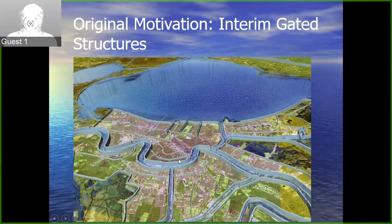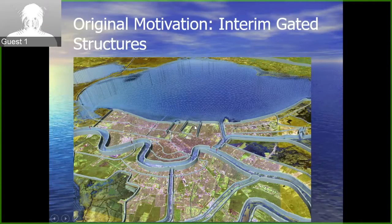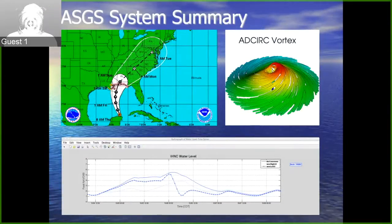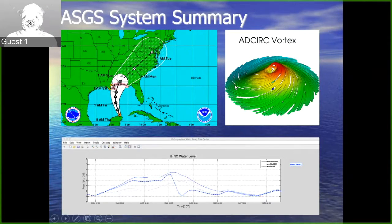After the storm, the Corps wanted to shore up those canals and build floodgates at the entrances where they lead into Lake Pontchartrain. At the time those gates would have to be lowered in place with tall cranes because the hydraulic actuation was not finished yet, so they needed real-time guidance for wind and water level at those three locations because the cranes could not operate in high wind. They wanted that guidance produced by ADCIRC.